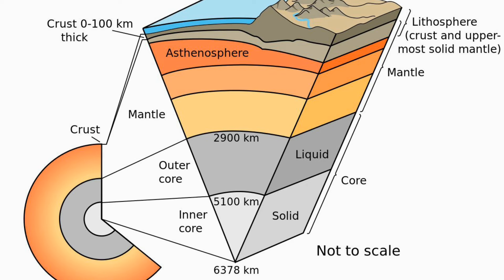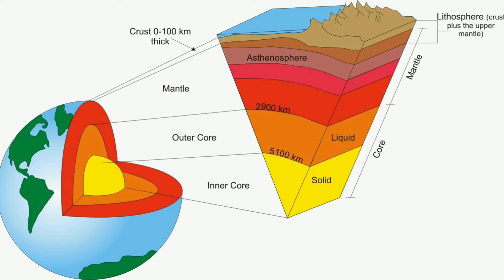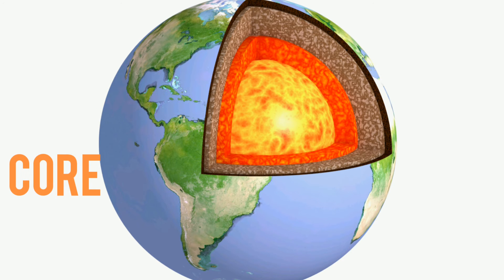It is at the boundary of these plates where major tectonic activity occurs, such as earthquakes and volcanoes. From the base of the lithosphere to a depth of about 400 km, there is a zone of soft, dense, and highly viscous rock material called the asthenosphere. The temperature and pressure of the asthenosphere is so high that rocks are softened and partly melt. Mantle rocks of the asthenosphere flow and cause the lithospheric plates to move.